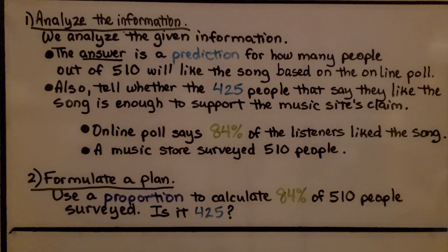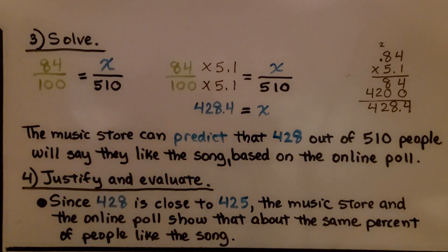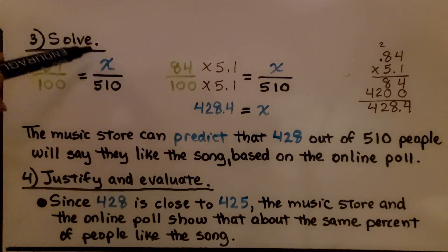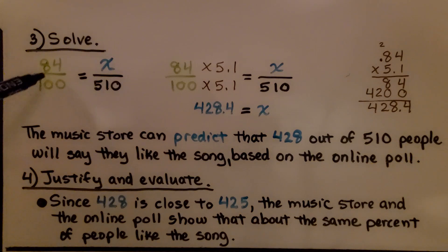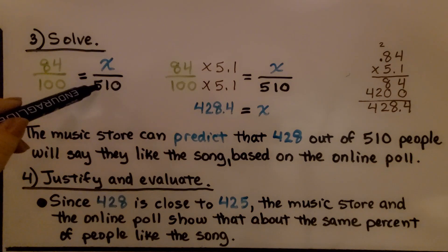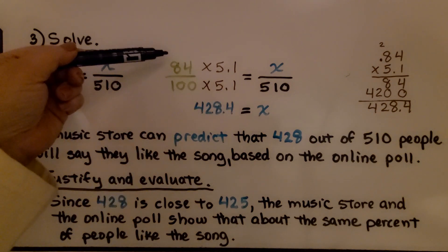Now we formulate a plan: we're going to use a proportion to calculate 84% of 510 people surveyed — is it 425? Now we solve it. We have 84%, which is 84 hundredths. We need to find x, written over the 510 people that were surveyed. We think: 100 times what number equals 510? That would be 5.1. We need to multiply the numerator by the same thing.